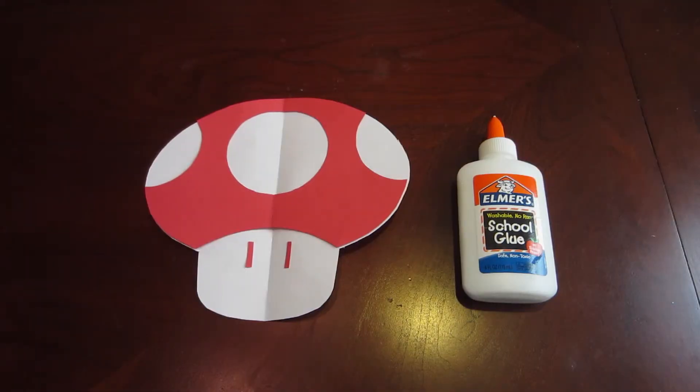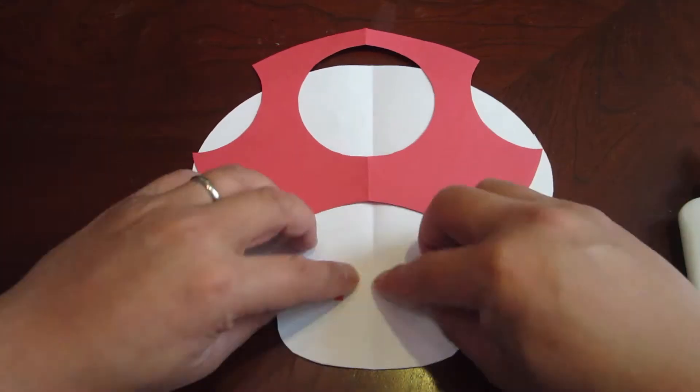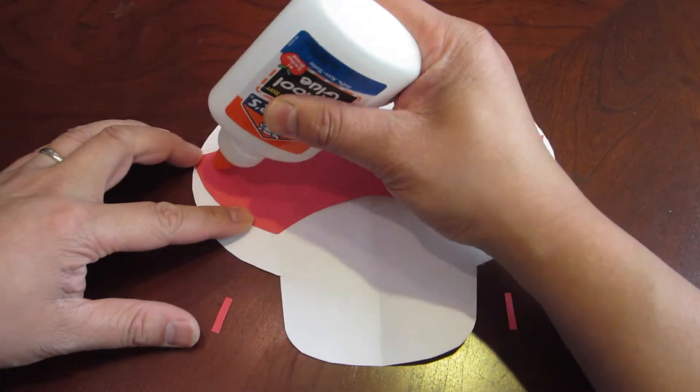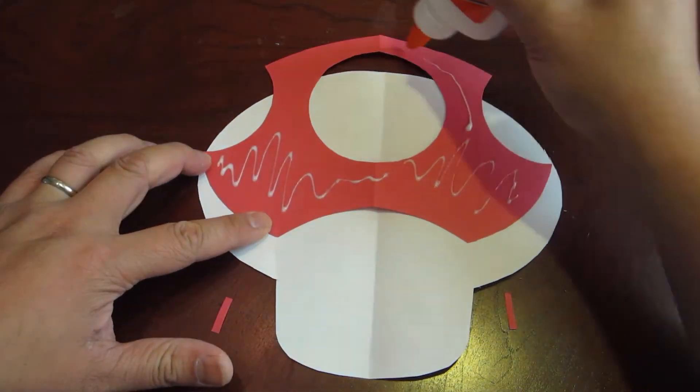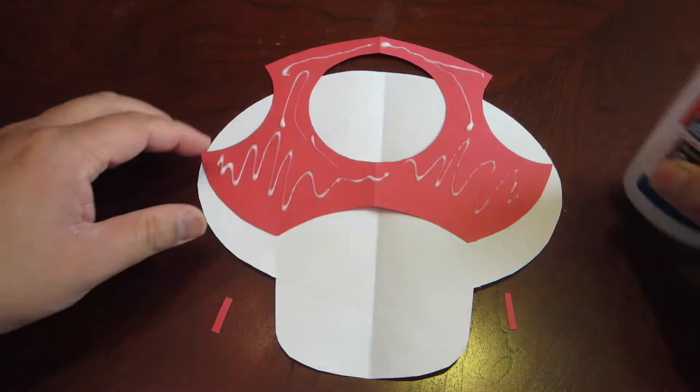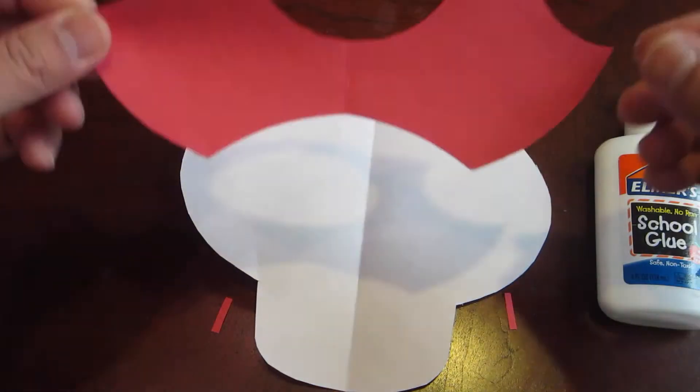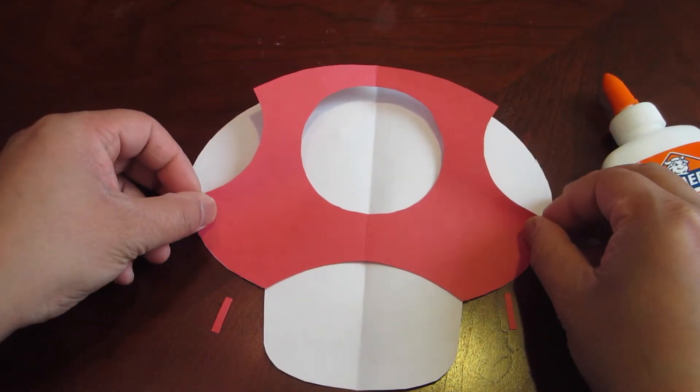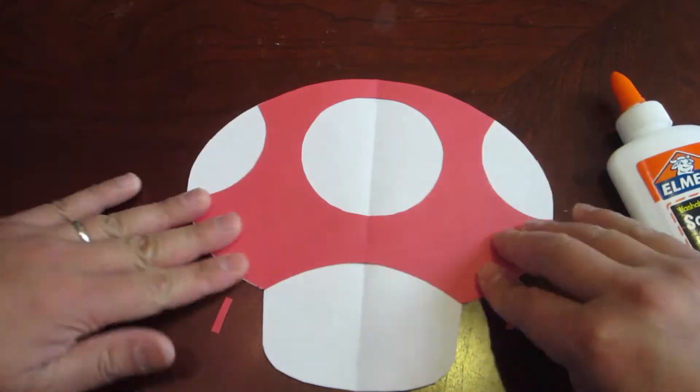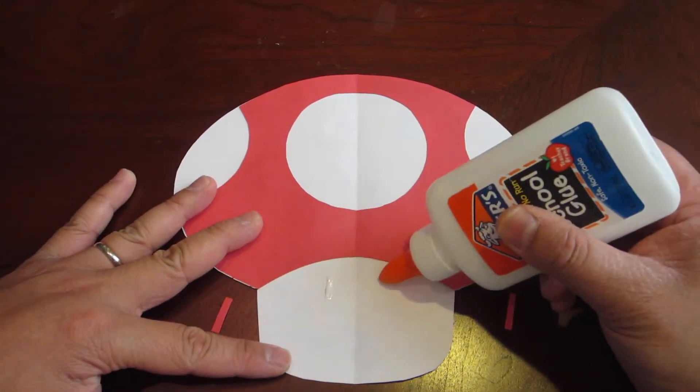Then set your mushroom up for gluing. Next start gluing away. Pre-glue for the eyes.